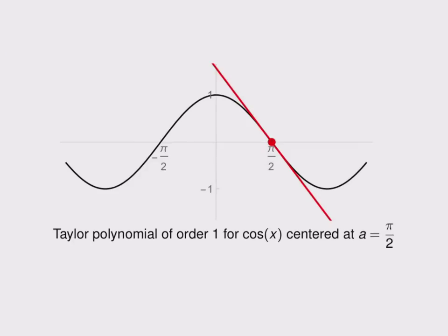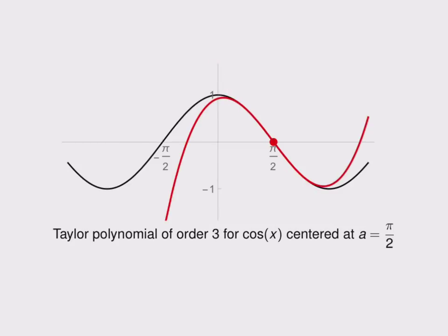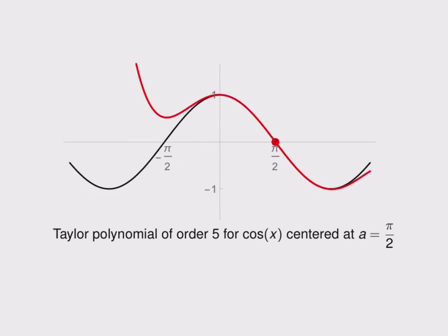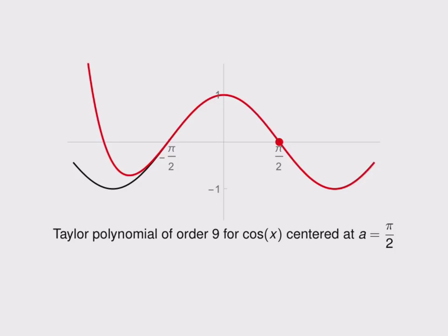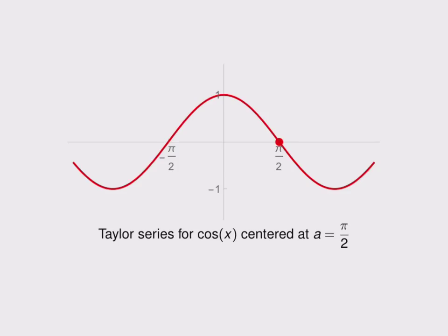Here's another visual example. Here's a Taylor polynomial of order one for cosine of x centered at pi over two. When the center is pi over two, that turns out to be the point where the tangent line is tangent to it — a first order Taylor polynomial is a tangent line. Here's the third order Taylor polynomial, a tangent cubic, centered at pi over two — it's a better match for the function. The fifth order Taylor polynomial is an even better match, as is the seventh and the ninth. If we let the order go to infinity, we get a Taylor series for cosine of x, and you can see that it is a perfect match for cosine of x.